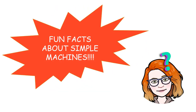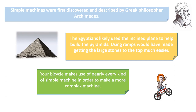Fun facts about simple machines. Did you know that simple machines were first discovered and described by Greek philosopher Archimedes? The Egyptians likely used the inclined plane to help build the pyramids — using ramps would have made getting the large stones to the top much easier. And your bicycle makes use of nearly every kind of simple machine in order to make a more complex machine.